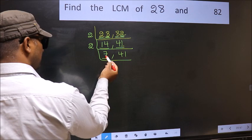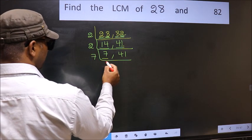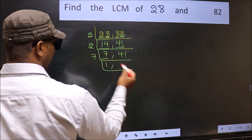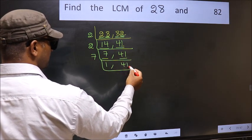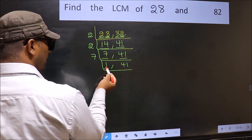Now here we have 7. 7 is a prime number. So 7 once is 7. The other number 41, not divisible by 7. So we write it down as it is. Now we got 1 here.